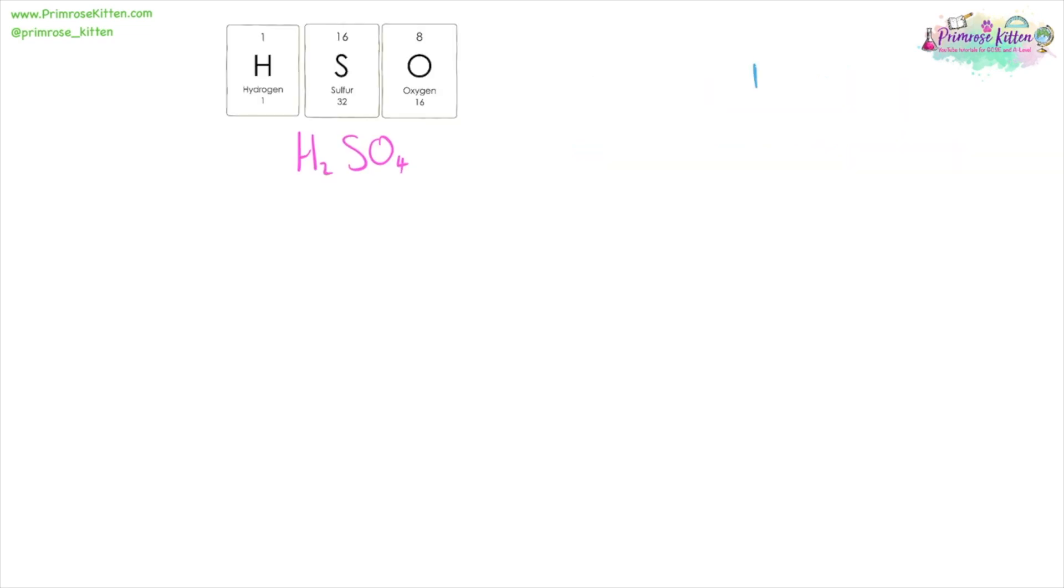When you are working out the MR, which is the relative formula mass, you need to take all of the ARs, which is the relative atomic masses, and add them together. Now the mass, remember, is the larger number of the two. It doesn't matter where it's located, it is the large number of the two.